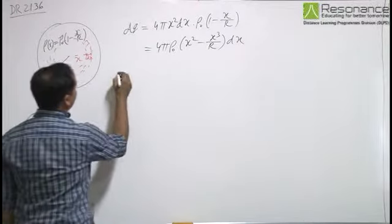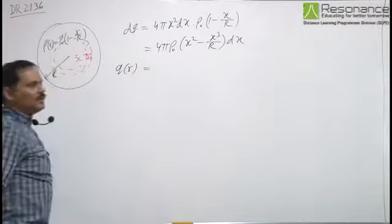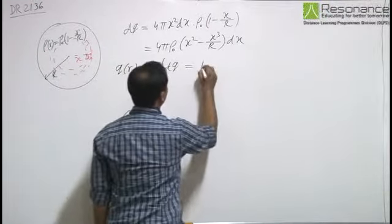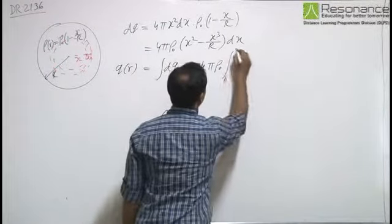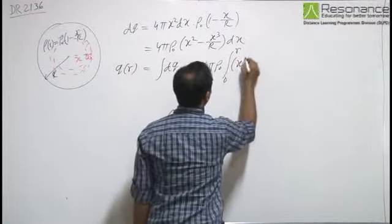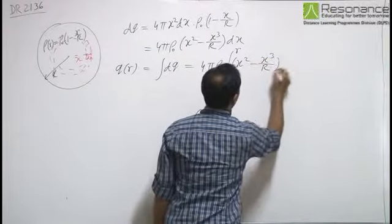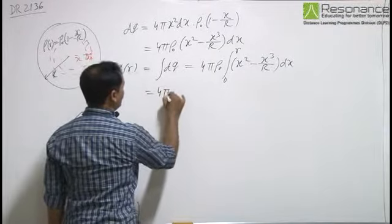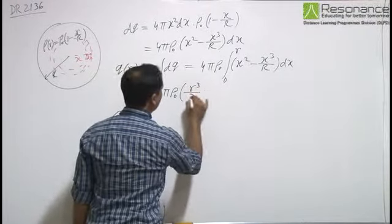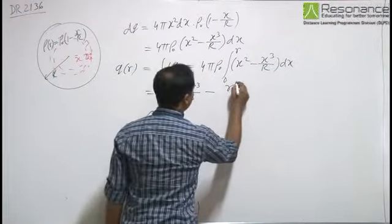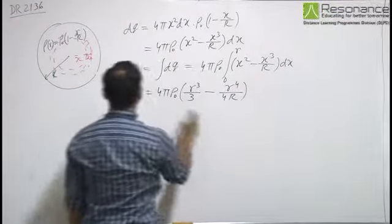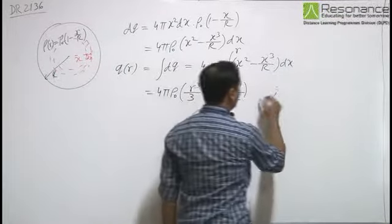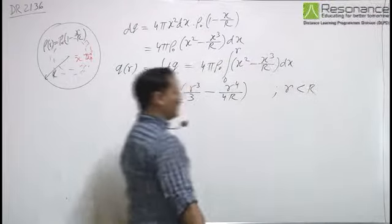The charge Q up to radius r is obtained by integrating dq from 0 to r: Q(r) = 4πρ₀ ∫₀ʳ (x² - x³/R)dx, which gives Q(r) = 4πρ₀(r³/3 - r⁴/4R). This is the amount of charge inside radius r, valid when r < R.